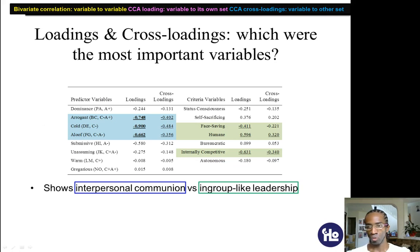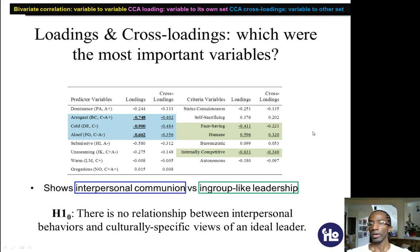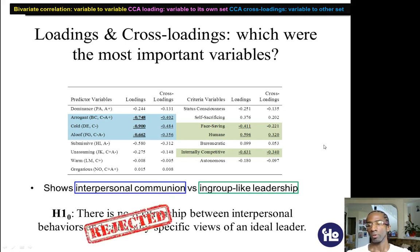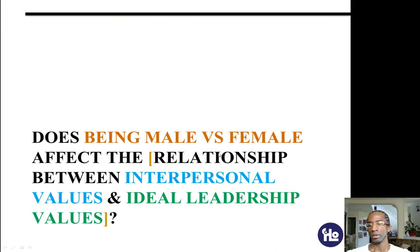Canonical function 1 basically shows that interpersonal communion — getting along with other people — is related to in-group-like leadership. If I had a hypothesis that said there's no relationship between these two sets, I would have to reject it because the relationships are indeed statistically significant. In the next video, for anyone interested, I'll show you how to break these sets down to do more advanced partitioning of your canonical correlation results.